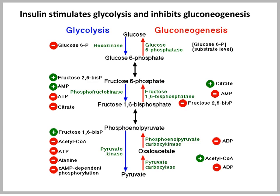Inside the cell, glucose is rapidly phosphorylated to glucose 6-phosphate, which then undergoes glycolysis, and the end result of that is pyruvate. Insulin inhibits gluconeogenesis, so it inhibits the production of glucose 6-phosphate.